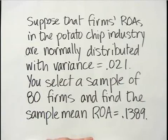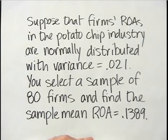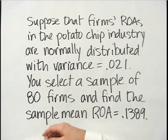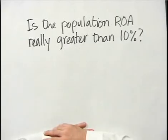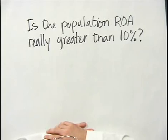Now we're going to move on to some even more interesting parts of statistical inference, and that is hypothesis testing. Suppose that firms' ROAs in the potato chip industry are normally distributed with variance equal to 0.021. You select a sample of 80 firms and find that the sample mean ROA is 0.1389, or 13.89%. Perhaps you are a seasoned follower of the potato chip industry, and you think that the return on assets in the potato chip industry really shouldn't be greater than 10%, and your number of 13.89% might surprise you. So you could ask yourself: is the population return on assets in the potato chip industry really greater than 10%?